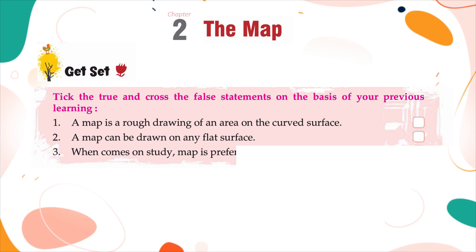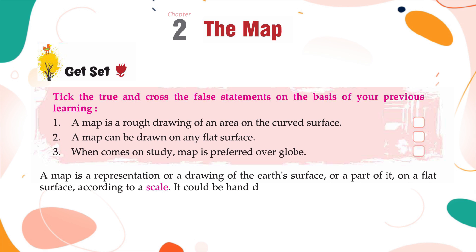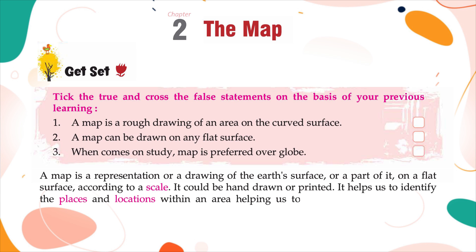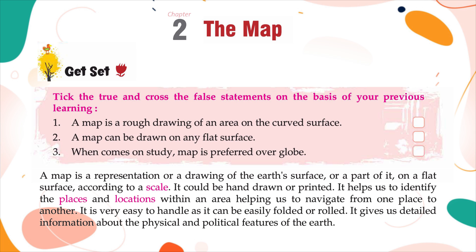When it comes to study, a map is preferred over a globe. A map is a representation or a drawing of the earth's surface or a part of it on a flat surface according to a scale. It could be hand-drawn or printed. It helps us to identify the places and locations within an area, helping us to navigate from one place to another. It is very easy to handle as it can be easily folded or rolled. It gives us detailed information about the physical and political features of the earth.